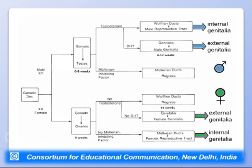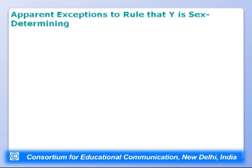The genetic constitution of the cell — whether XX or XY — governs the production of male or female. However, there are apparent exceptions to the rule that Y is sex-determining. The question becomes: what part of the Y chromosome determines maleness? To find out, scientists examined exceptional cases where XX individuals were male and XY individuals were female.